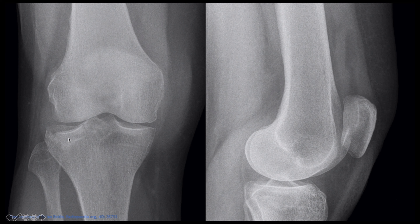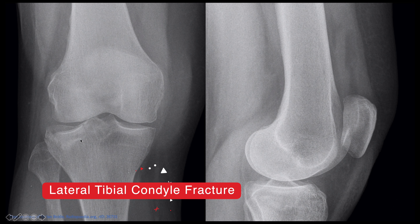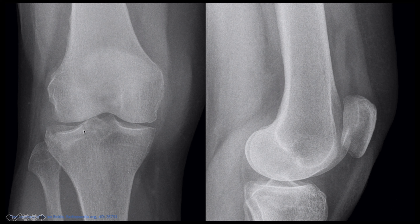This is an AP and lateral radiograph of a knee. The first thing that catches my eye is the presence of a large lipohemarthrosis - there's a fluid collection in the suprapatellar bursa. You can see an area of low density which is the fat, and an area of higher density corresponding to the blood. Once I see this, I know there's a significant traumatic injury and I look carefully around the bones for fractures. Looking at the AP radiograph, you can see there's a lateral tibial condyle fracture, and there's a dip of the lateral tibial plateau with increased sclerosis - this is a lateral tibial plateau fracture.